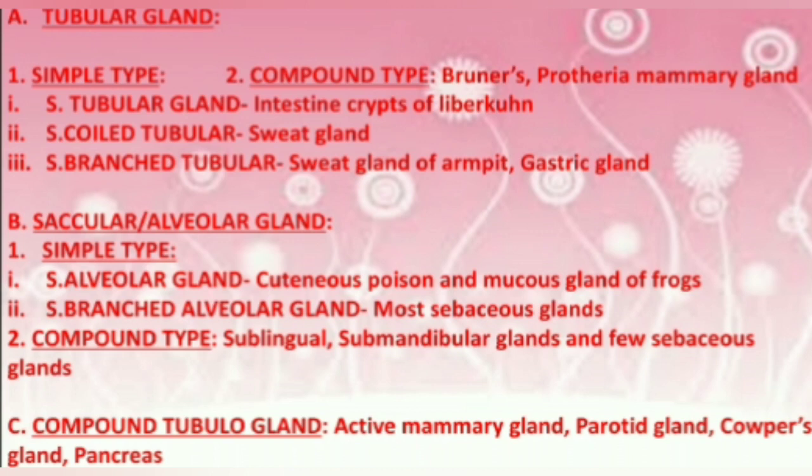The compound tubular gland examples include the active mammary gland, the parotid gland, Cowper's gland, and the pancreas.